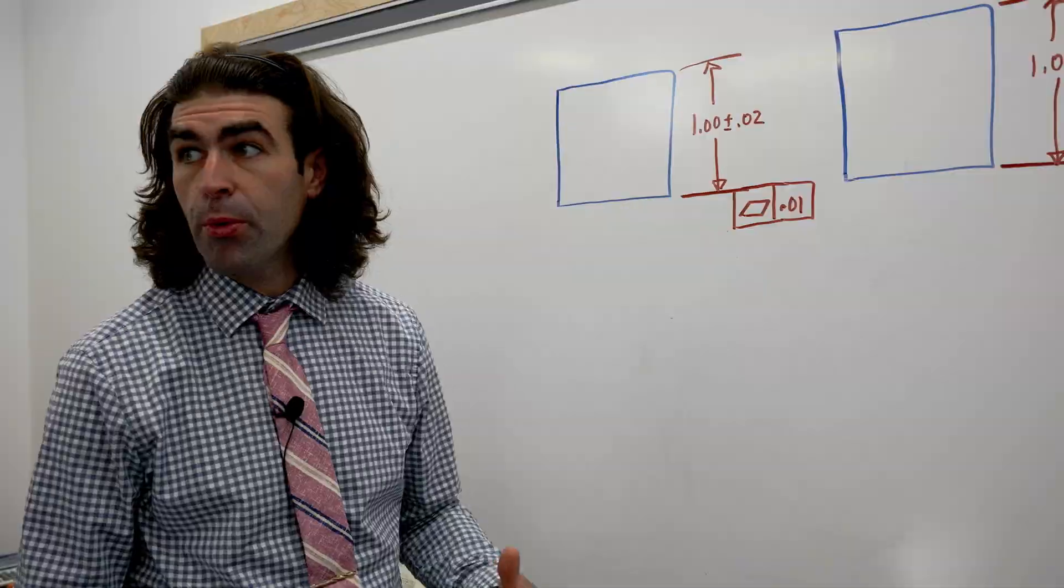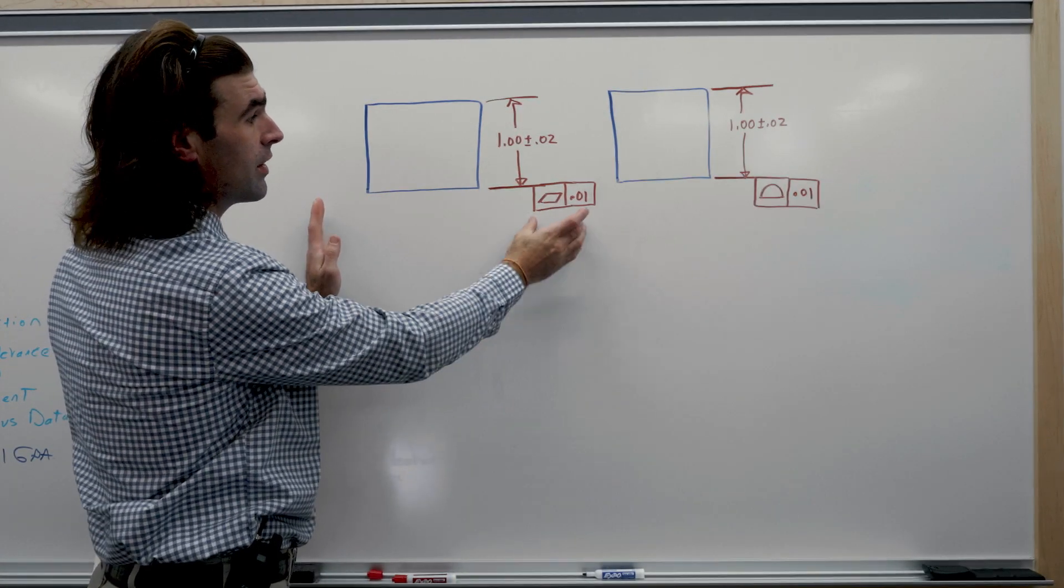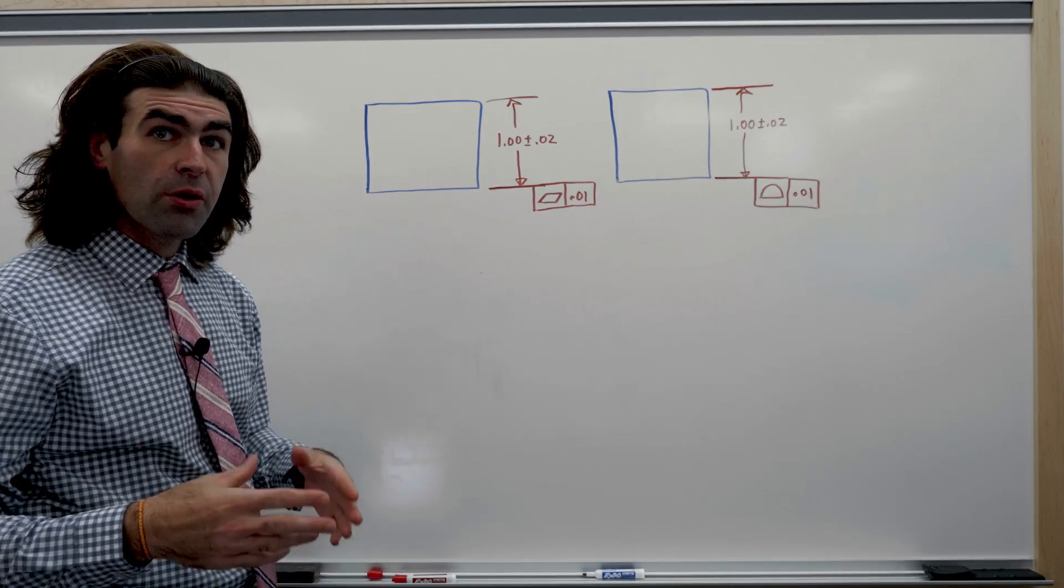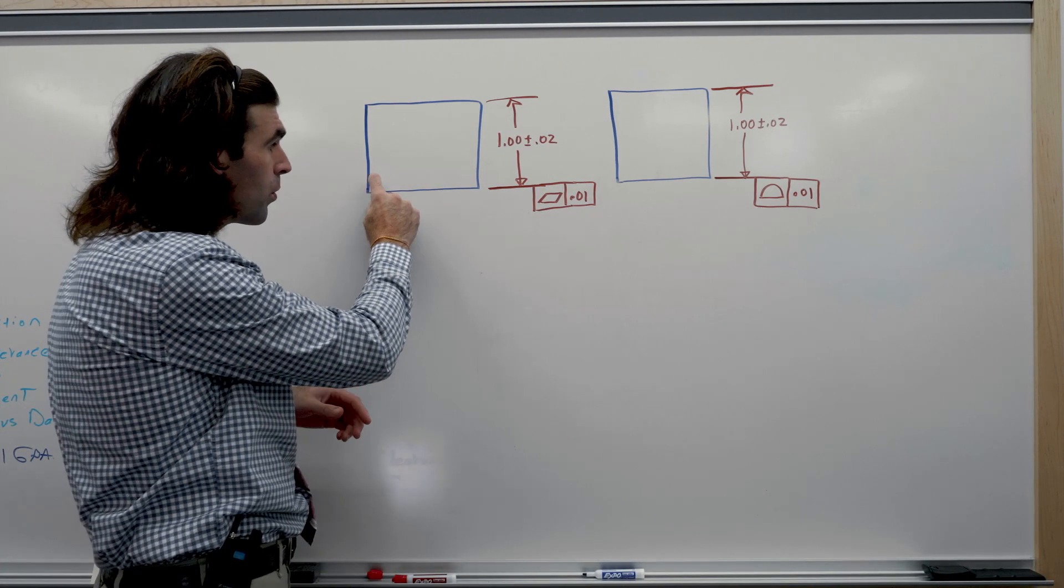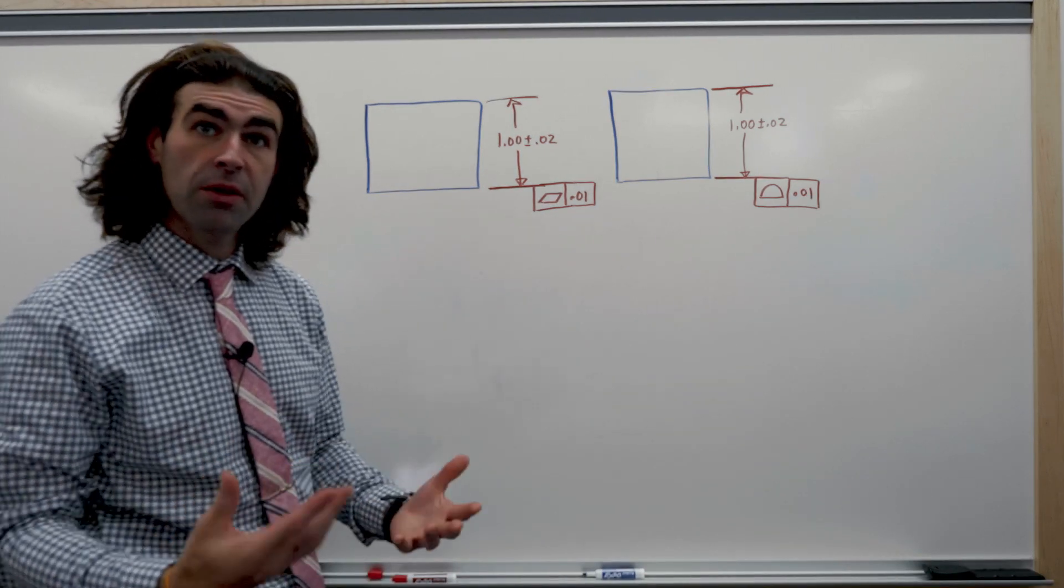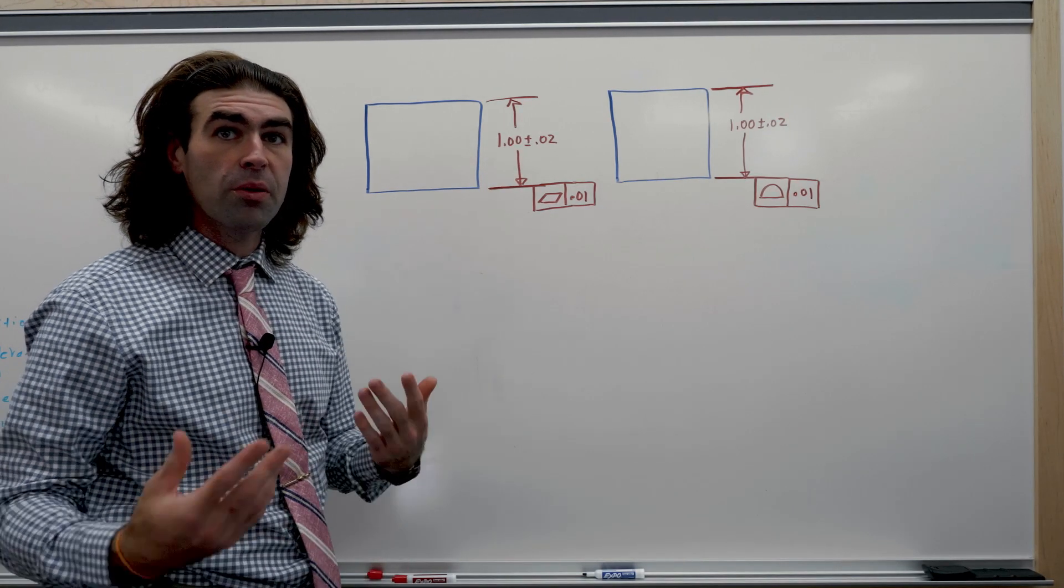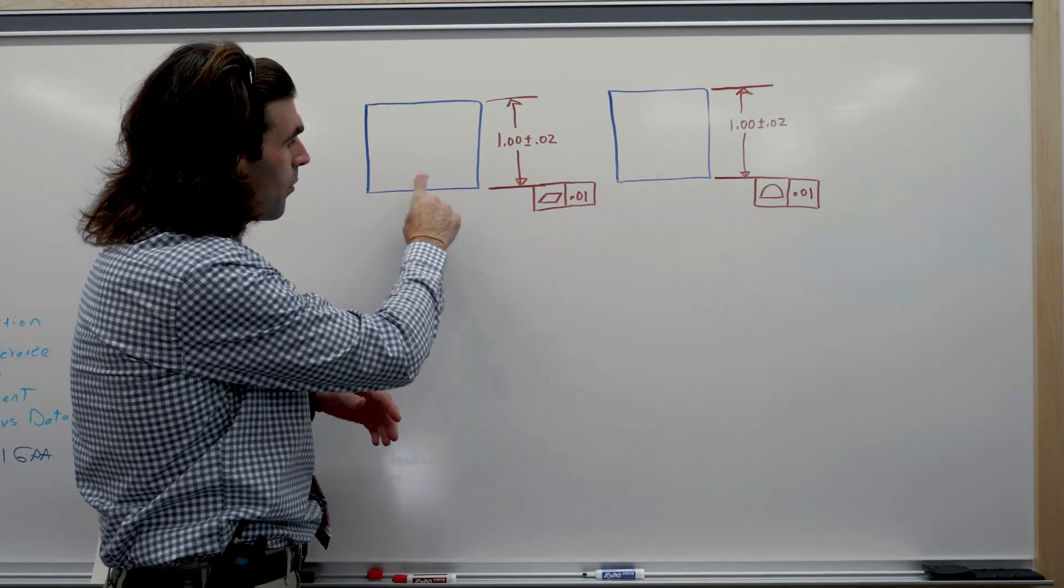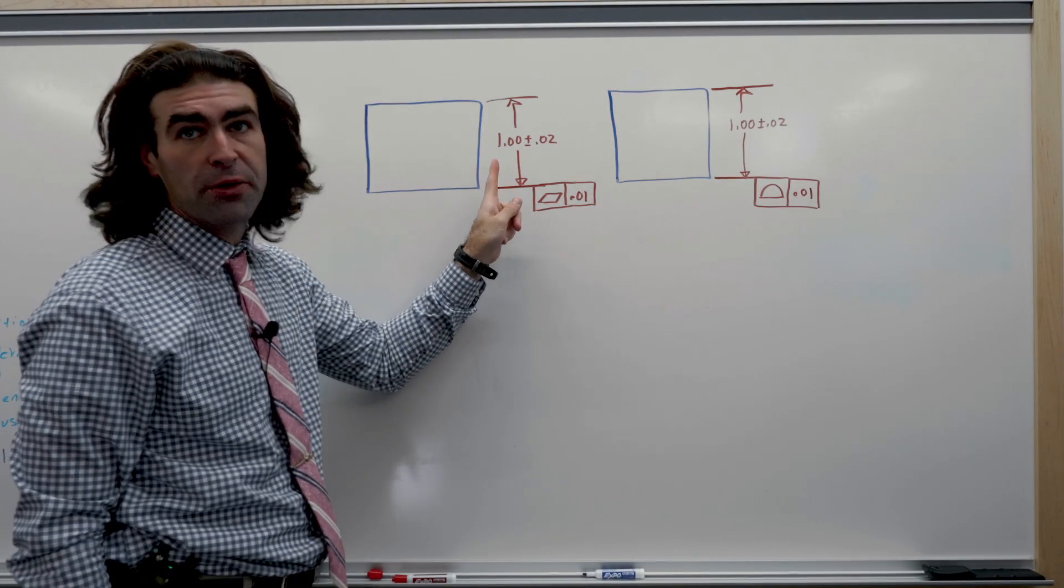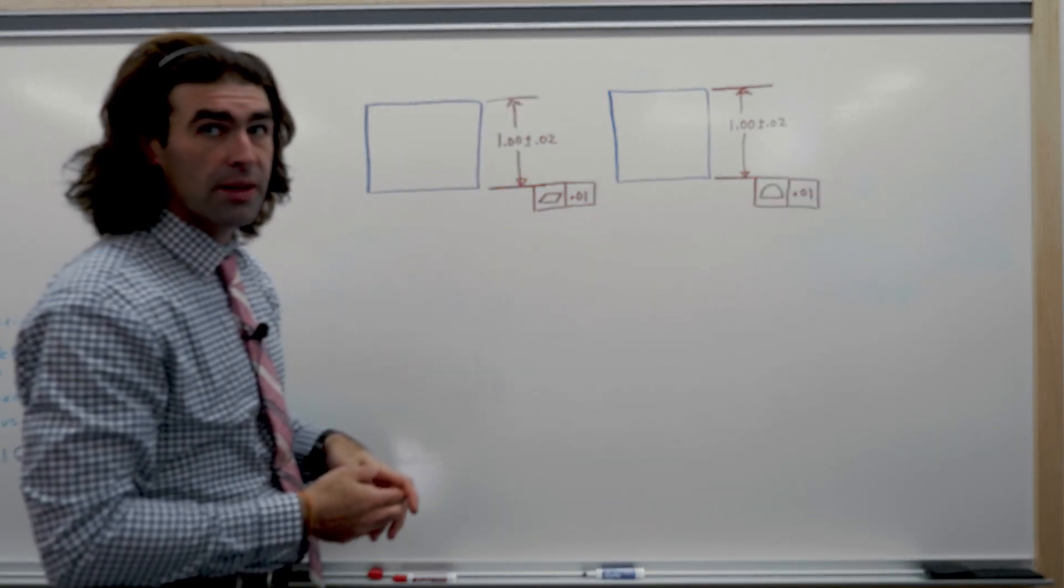I've got some examples on the board here. This is a block with a size dimension and a flatness. I think I've gone through in other videos what this means. You've got two parallel planes where the surface of the part has to be within. It has no relation to anything else on the part. So the part could be wildly angled and it would still meet flatness. It might fail size but it could meet flatness even if this part is a big angle or something.